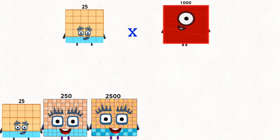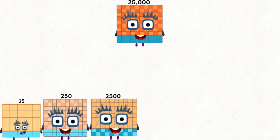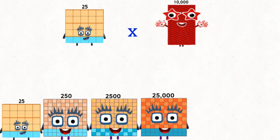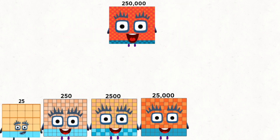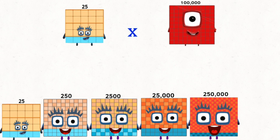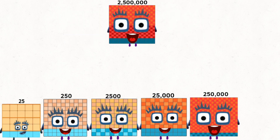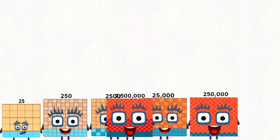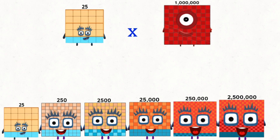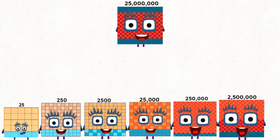25 times 1,000 equals 150,000. 25 times 100,000 equals 1,500,000. 25 times 1 million equals 25 million.